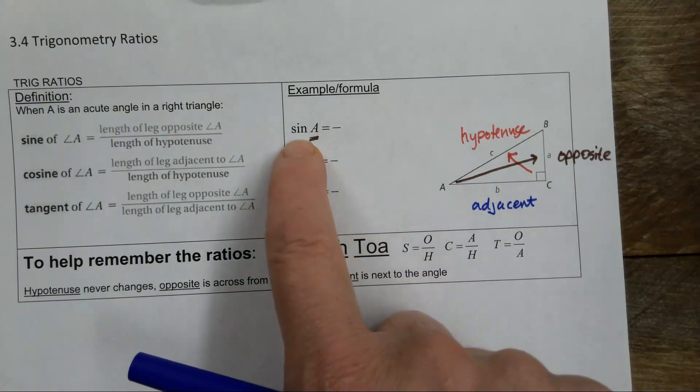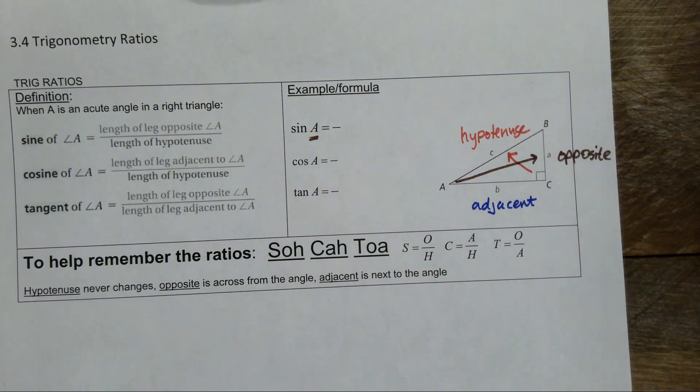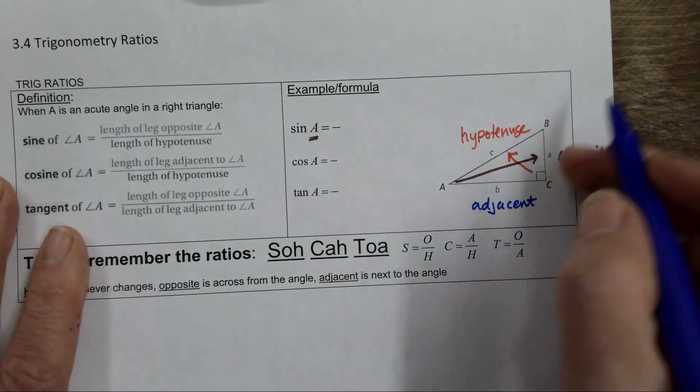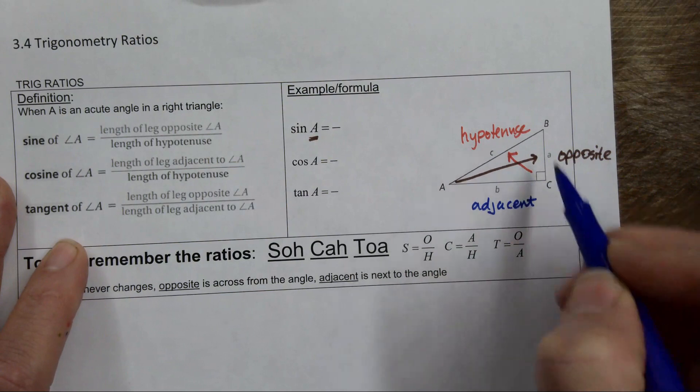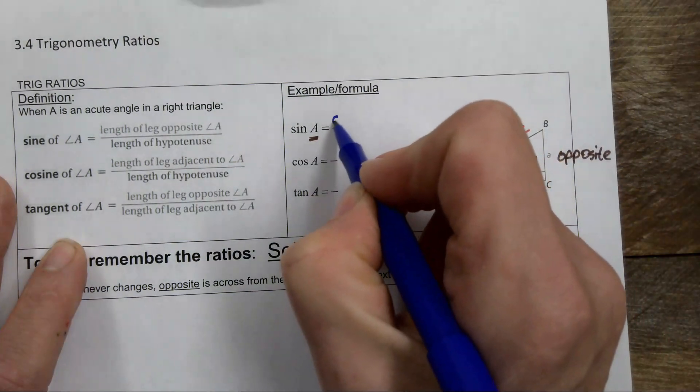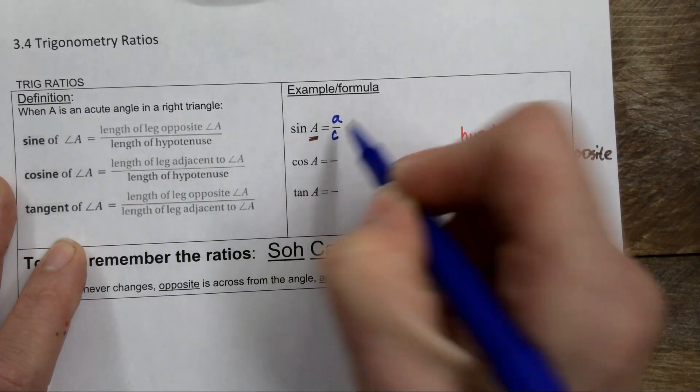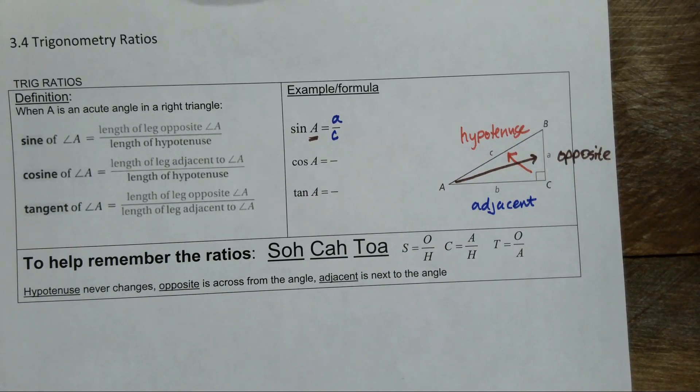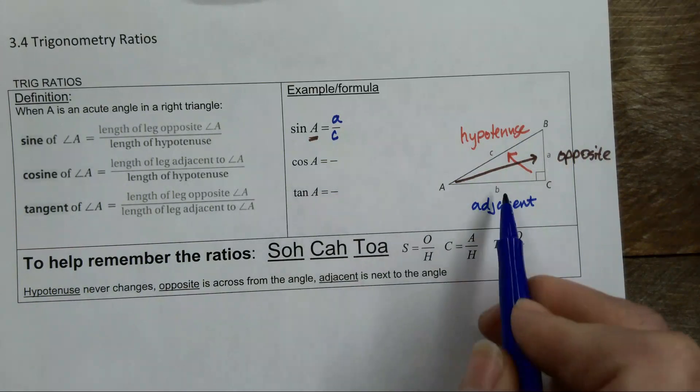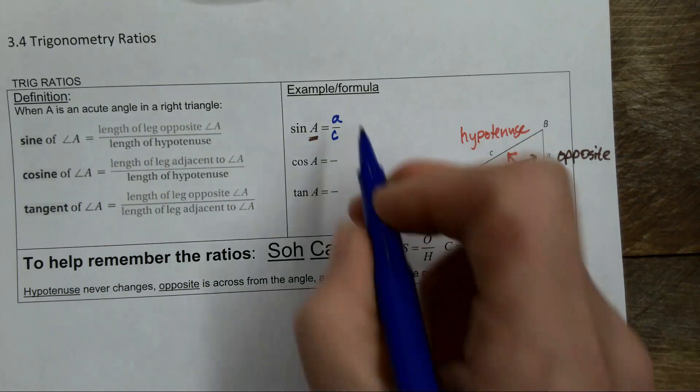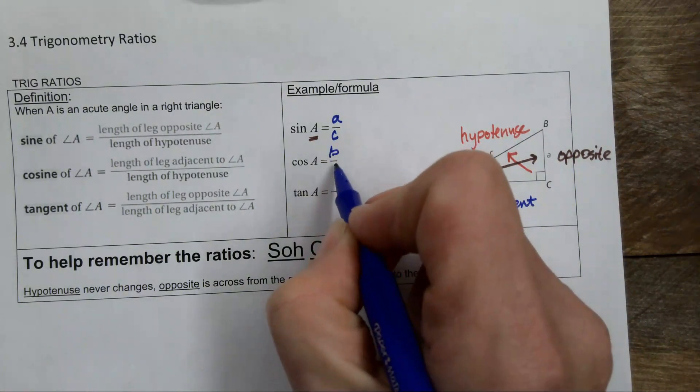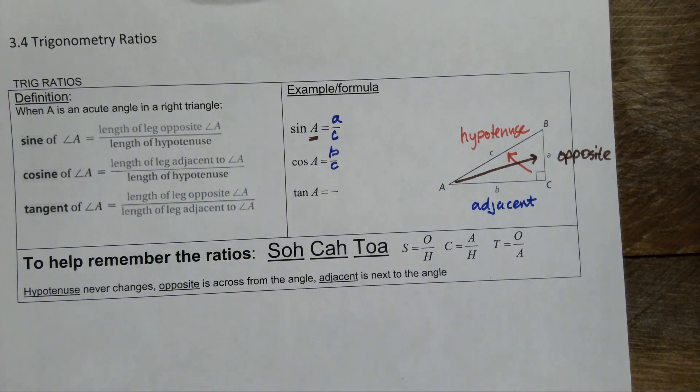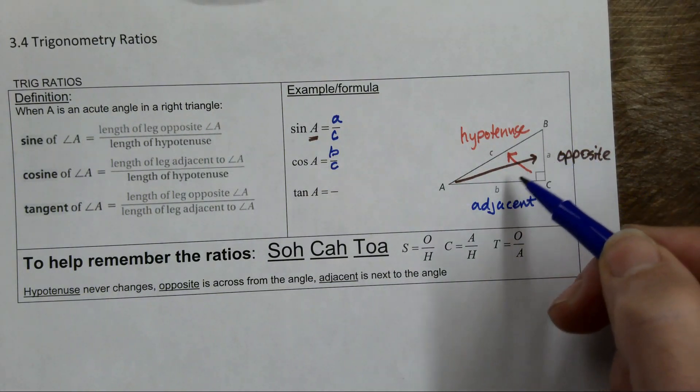If I want the sine of A, I take the length opposite and I put it over the hypotenuse, so it would be a over c. The cosine of A is the adjacent over the hypotenuse, so this would be b over c. And you just write it as a fraction. Tangent is opposite over adjacent, so it's a over b.